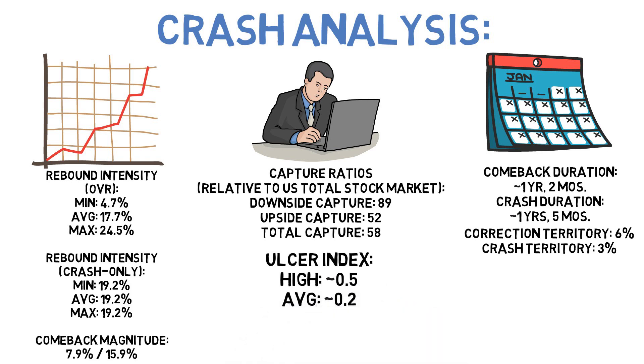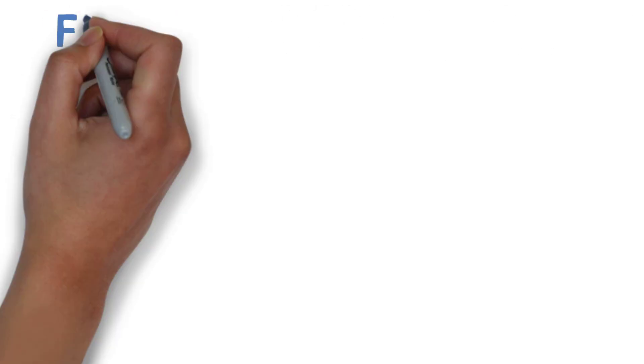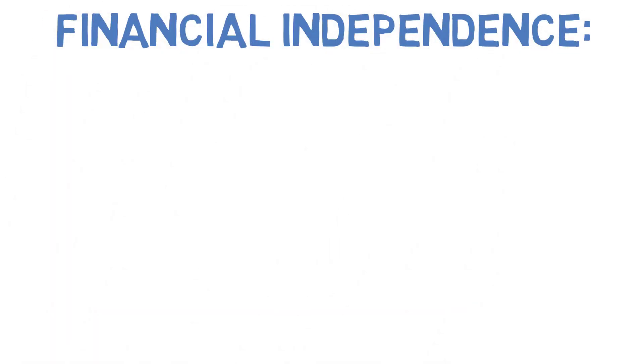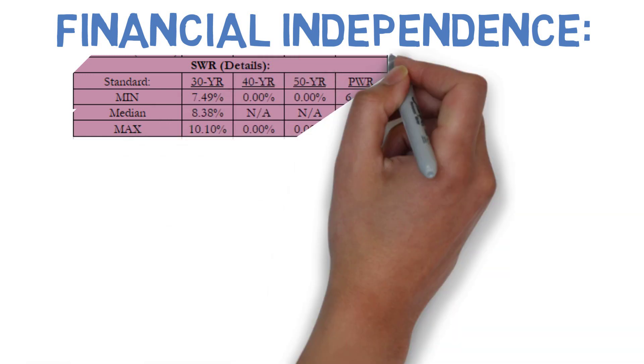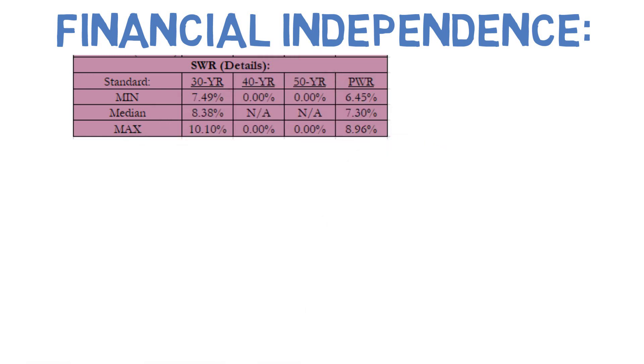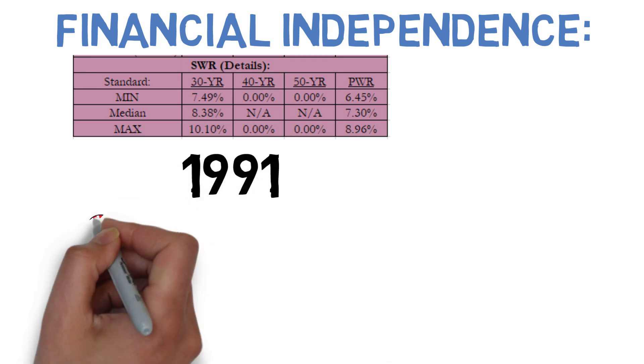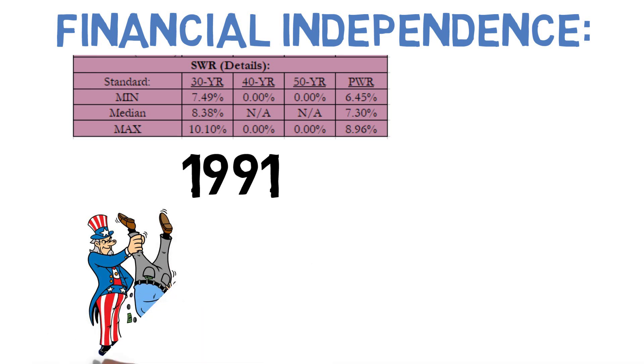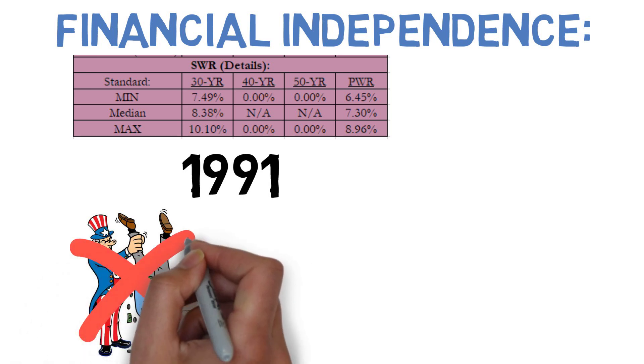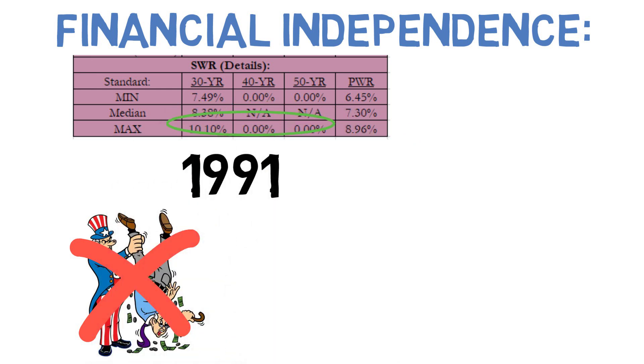Historically speaking, the Swenson strategy would have maintained a minimum 30-year safe withdrawal rate of about 7.49% during this timeframe, the third best among the strategies we've covered. The worst year to retire using this strategy was 1991. I should note that as usual, due to the varying nature of individual expense ratios and tax situations, neither has been considered in these withdrawal rates. The median and maximum rates were 8.38% and 10.1% respectively.